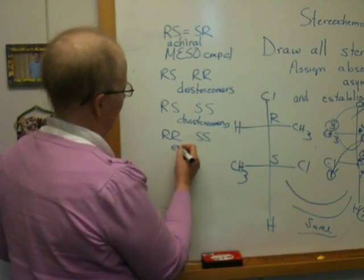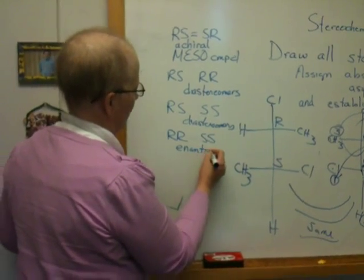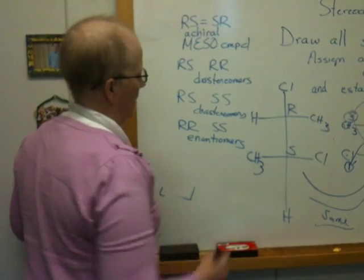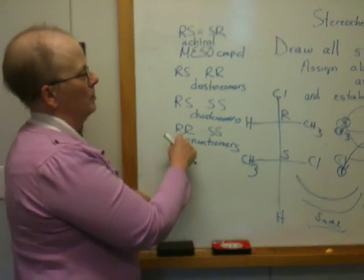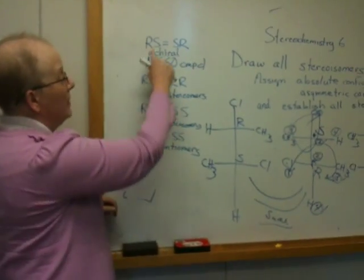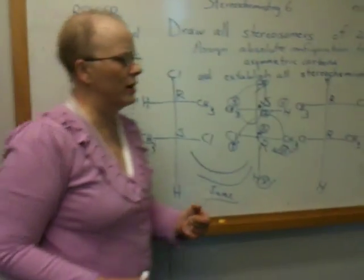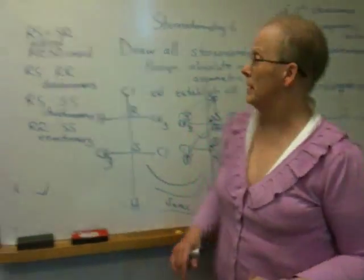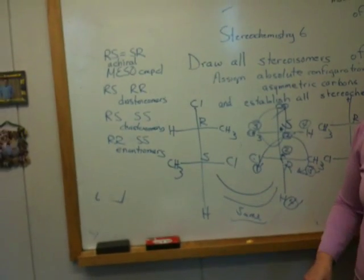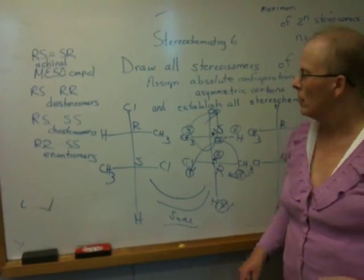They are enantiomers, as we described before. These are non-superimposable mirror images. These are different compounds. But these are the same. And this should kind of strike you as strange because in the last problem I did, the RS was the enantiomer of the SR. They were different.